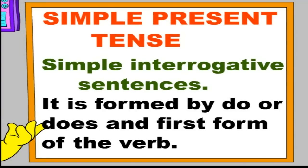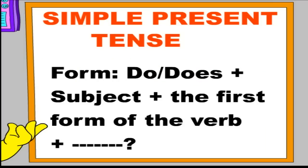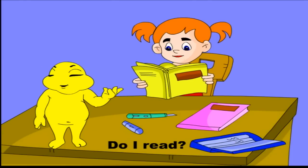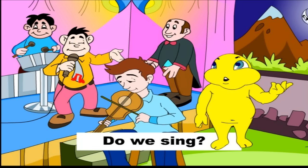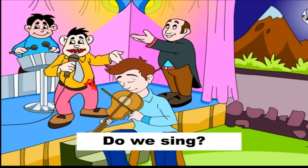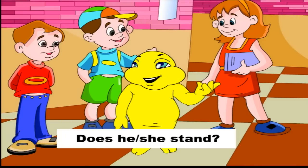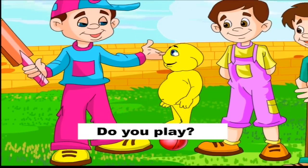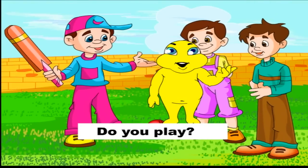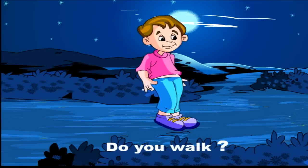Simple Interrogative Sentences. It is formed by do or does and first form of the verb. Form: Do or Does plus Subject plus the first form of the verb. Examples: Do I read? Do we sing? Does he or she stand? Do you play? Do you walk?